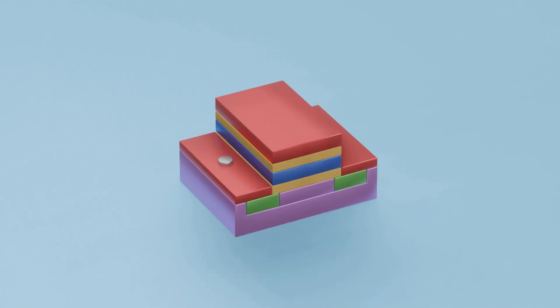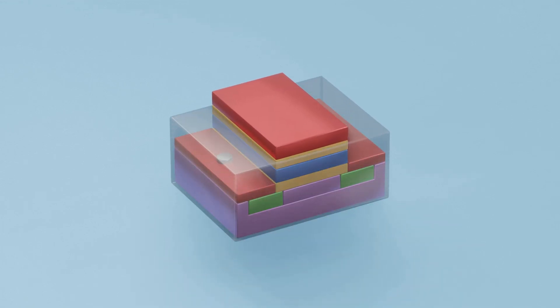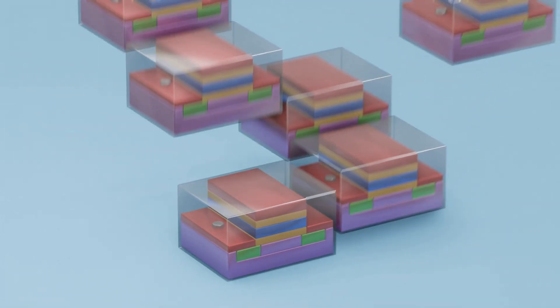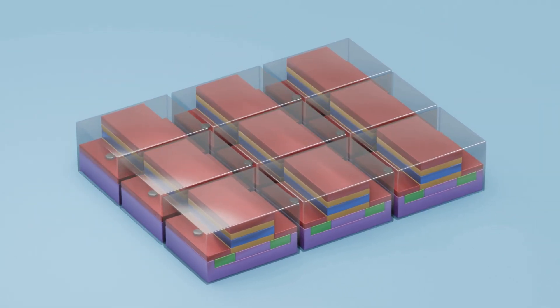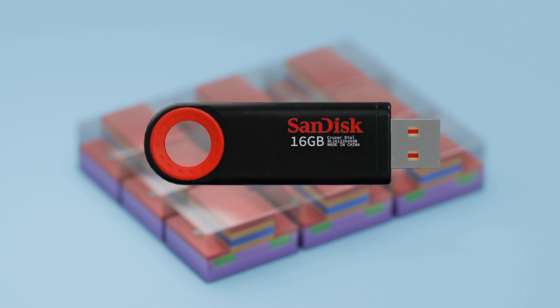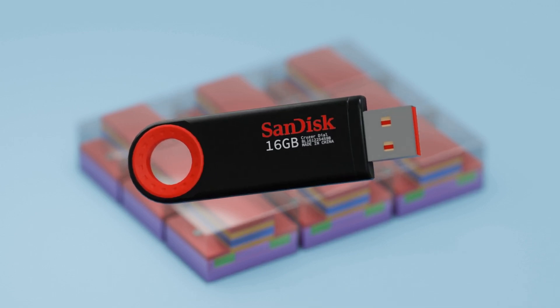The FG MOS transistors are a type of MOSFET transistor and serve as the building blocks of modern storage devices. For reference, a 16GB RAM memory is made up of billions of these transistors.